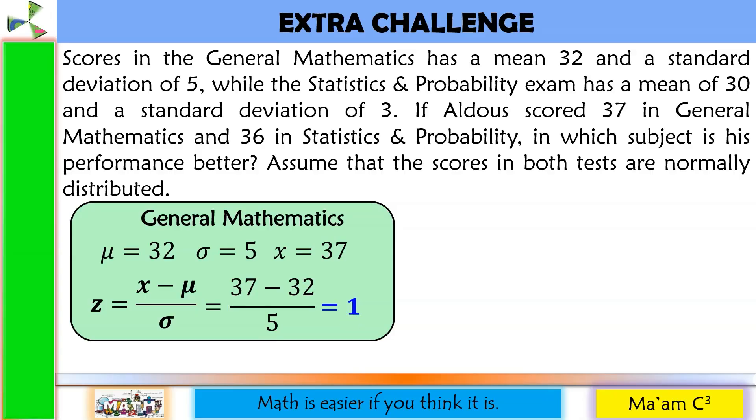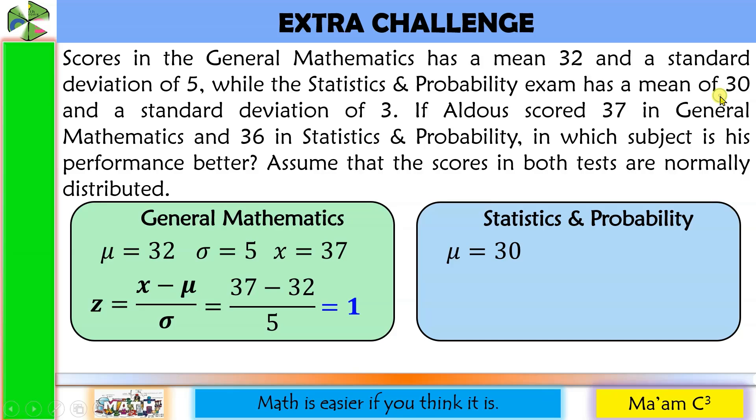Now let us have the statistics and probability. Here the mean is 30 and a standard deviation of 3. Aldous scored 36 in his statistics and probability. So X is equal to 36. Let us substitute to our formula 36 minus 30 divided by 3. 36 minus 30 is 6 divided by 3 is equal to 2.